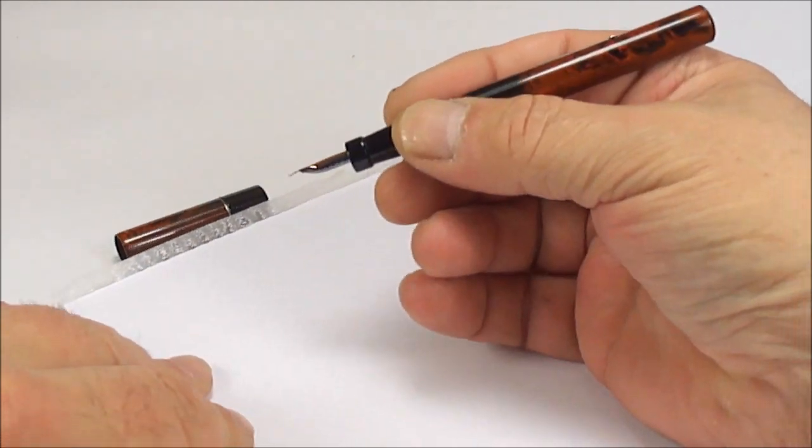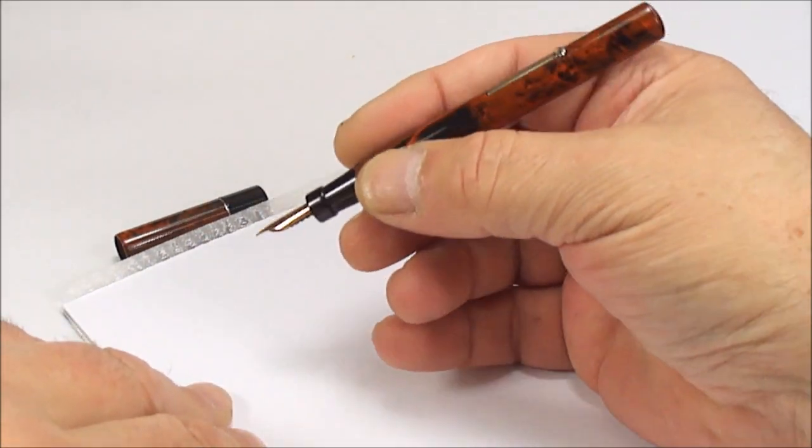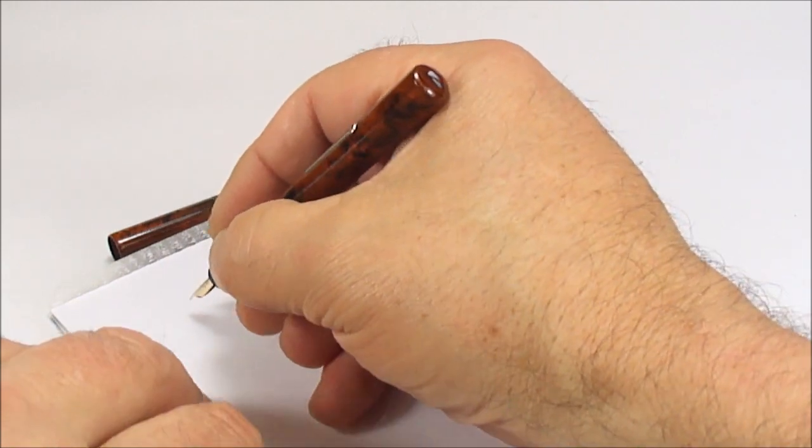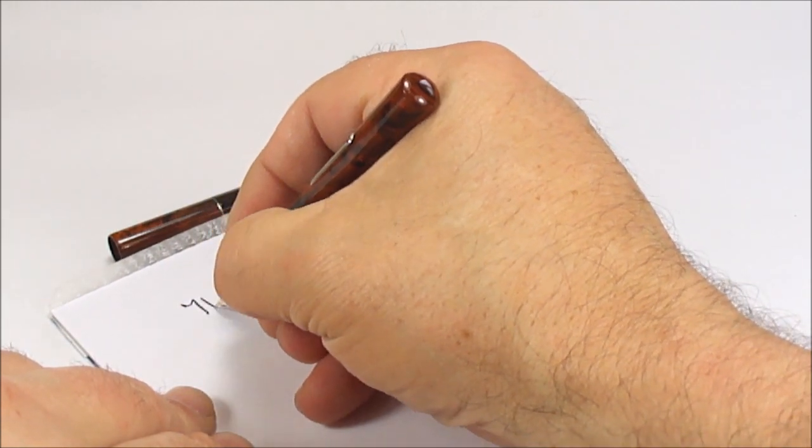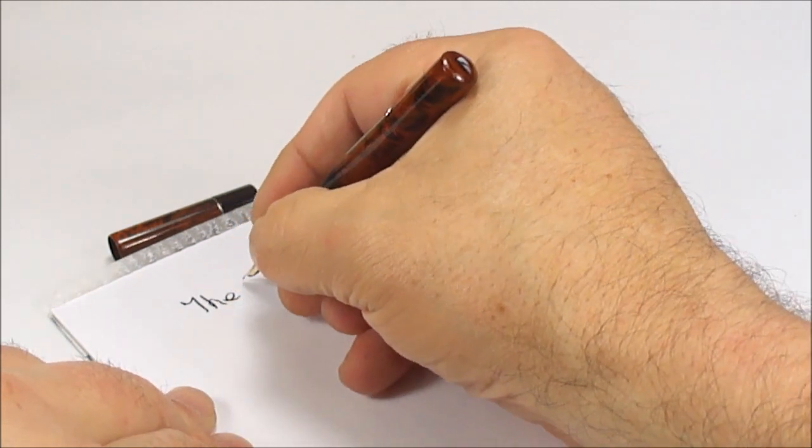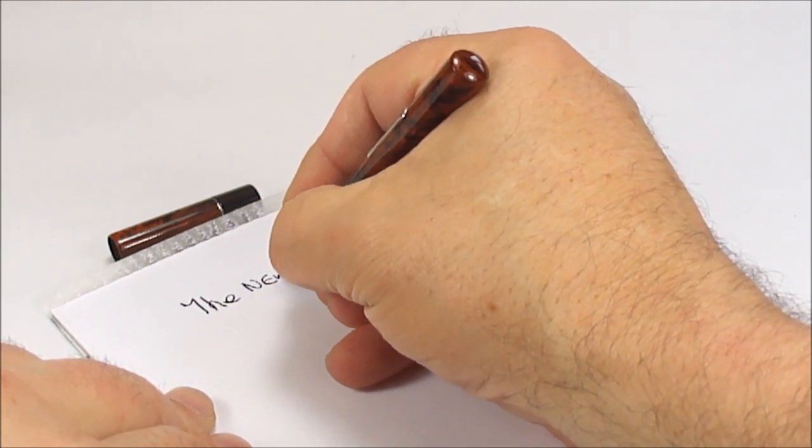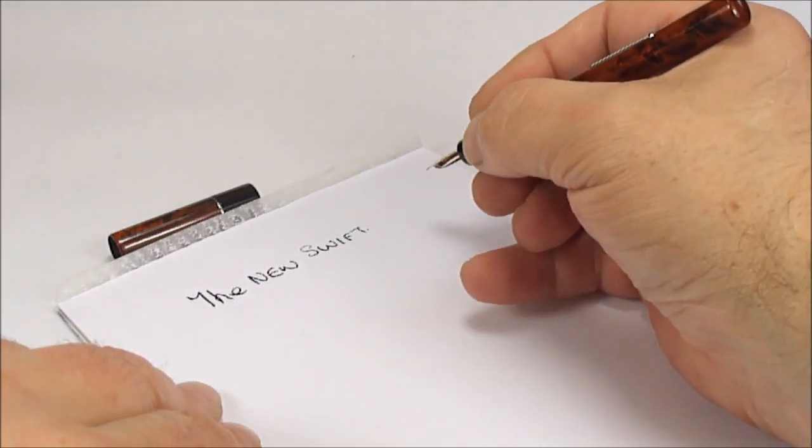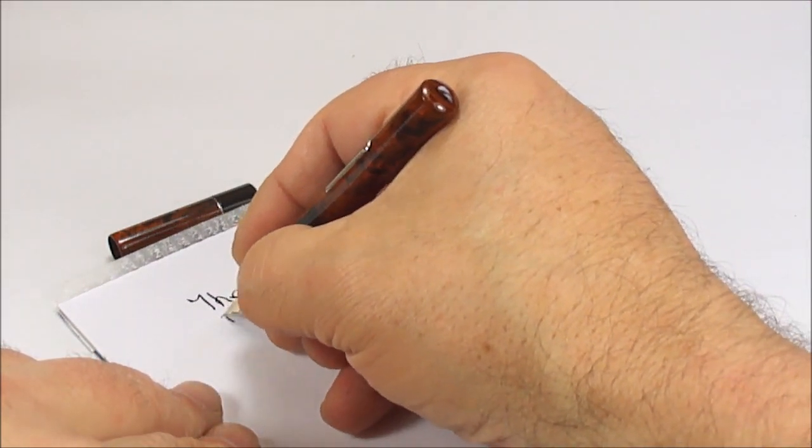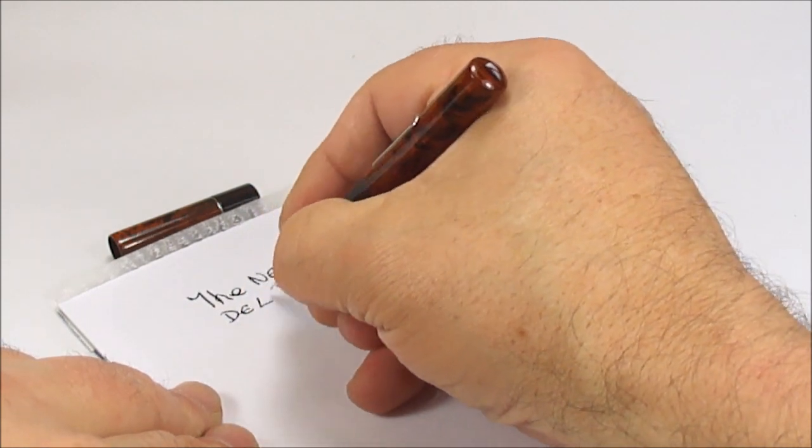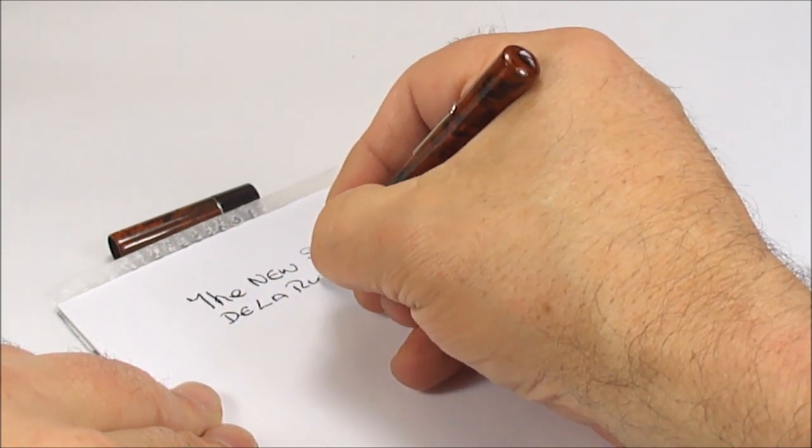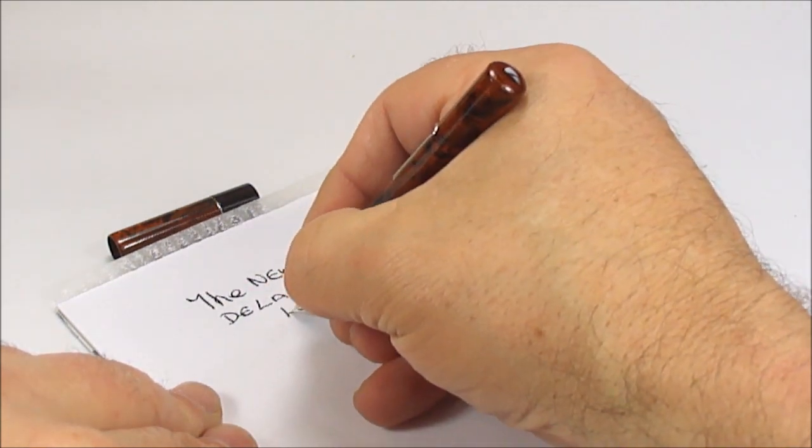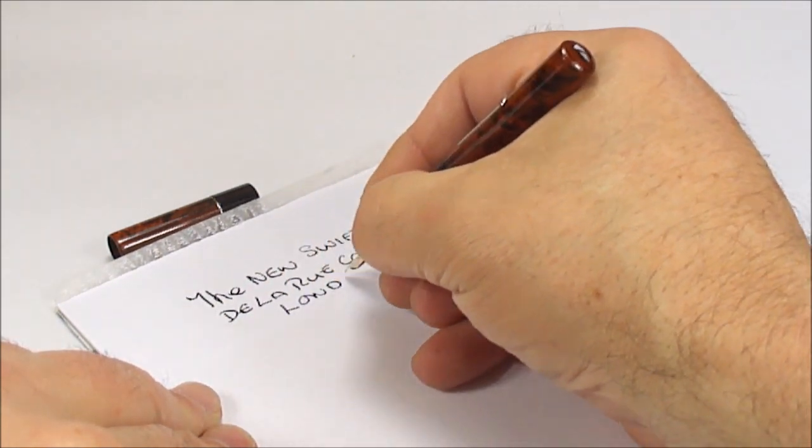And if we put that to one side, and bring on some paper, and let's see, as with always, with all my reviews, this is the first time it's been written with, so, let's see how it writes. So, what we've got, the New Swift Fountain Pen, as we said, this one is from Delarue and Company Limited, obviously, as it says on the barrel, from London.